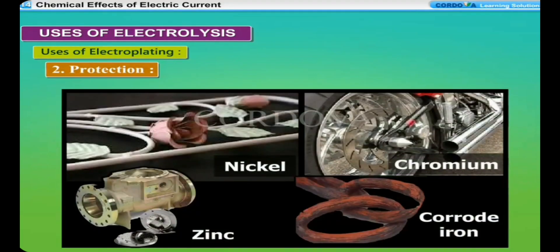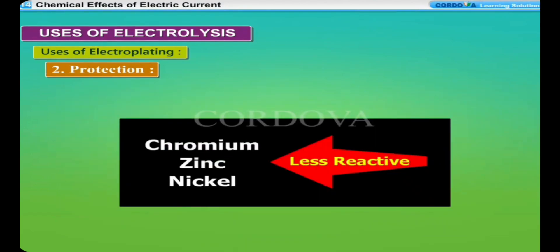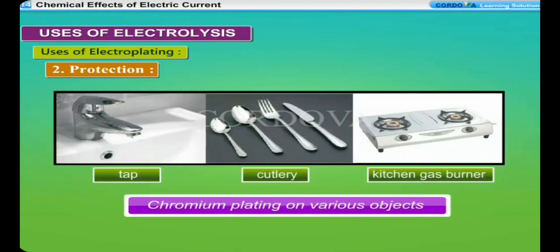Protection: Iron objects are electroplated with chromium or nickel or zinc to protect them from rusting. This is because chromium, nickel and zinc are less reactive metals which do not corrode easily.